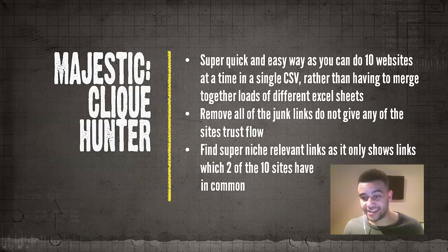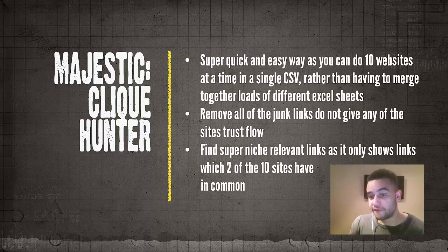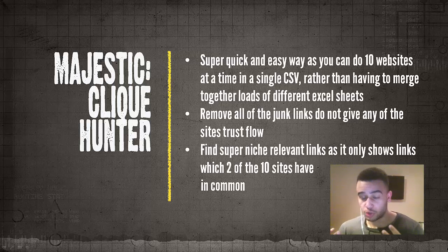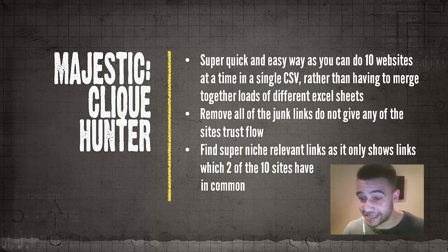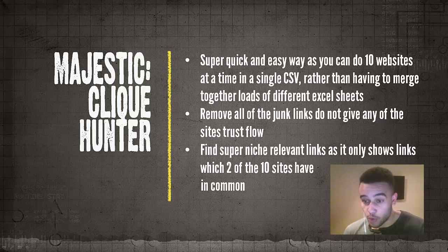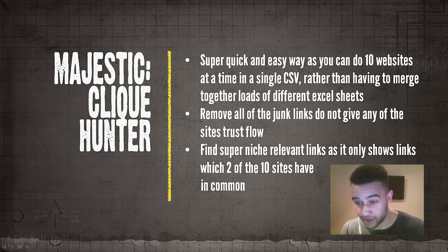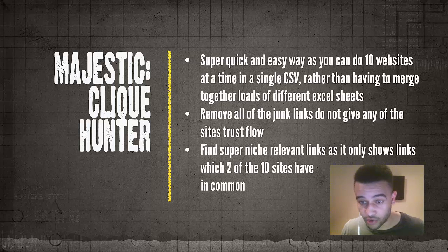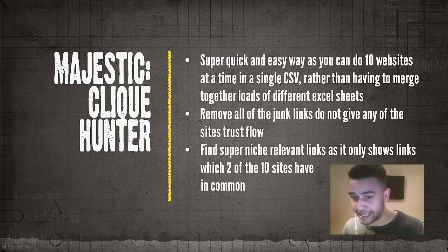The tool I'm using is Majestic SEO, one of the top link analysis tools in the SEO community. The specific feature I'll be using is Majestic Click Hunter, which I've seen very few blog posts about. By the end of this video you'll have a spreadsheet of high quality niche relevant links from up to ten competitors, generated in under five minutes. Majestic Click Hunter only seeks links that link to two or more of the ten sites you specify.